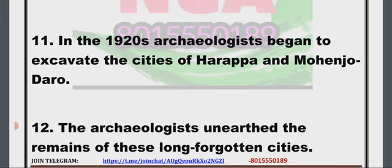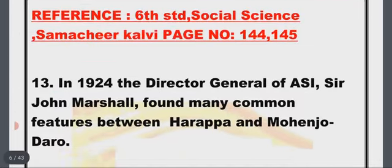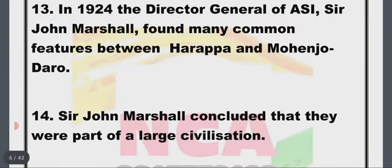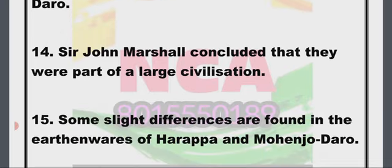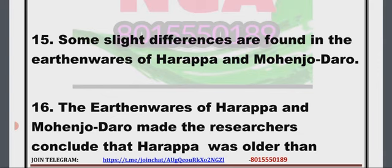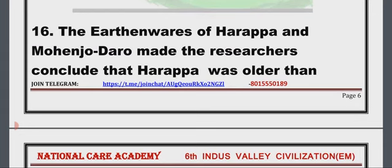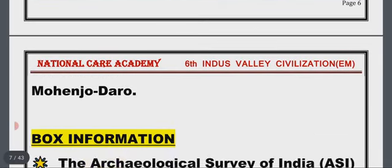Point 11: In the 1920s, archaeologists began to excavate the cities of Harappa and Mohenjo-daro. Point 12: The archaeologists unearthed the remains of these long-forgotten cities. Point 13: In 1924, the Director General of ASI, Sir John Marshall, found many common features between Harappa and Mohenjo-daro. Point 14: Sir John Marshall concluded that they were part of a large civilization. Point 15 and 16: Some slight differences found in the earthenware of Harappa and Mohenjo-daro led researchers to conclude that Harappa was older than Mohenjo-daro.